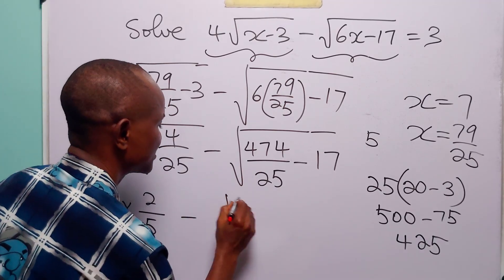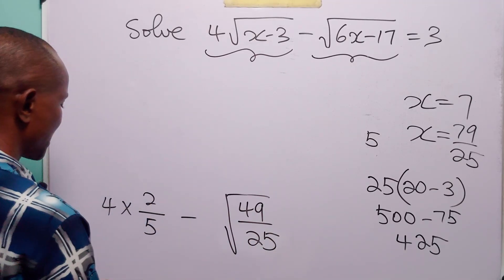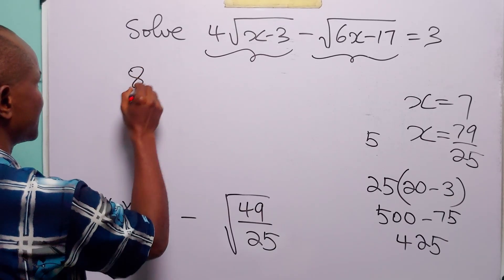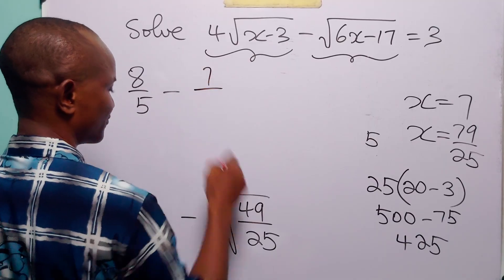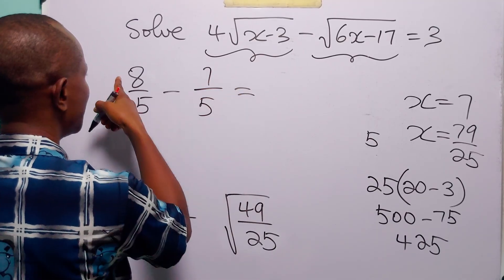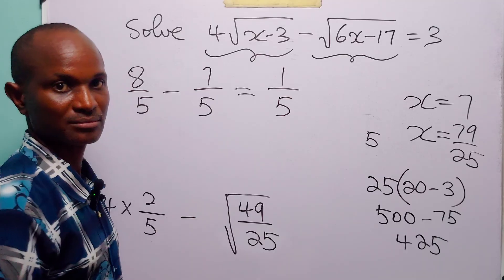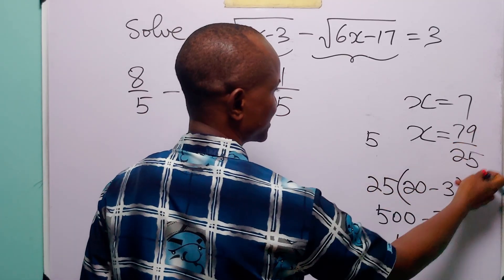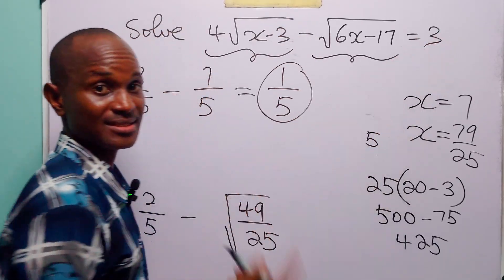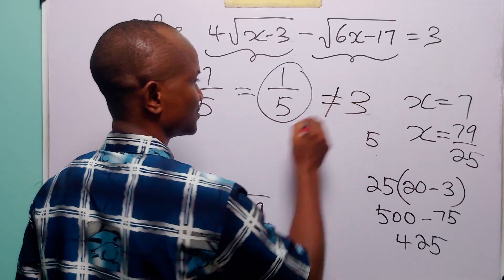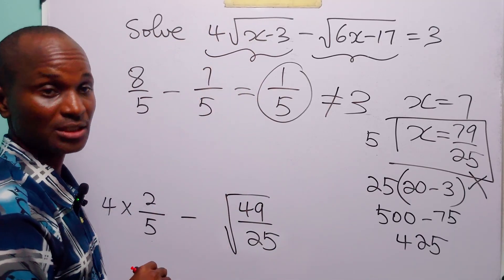So we have 4 × √(4/25) - √(49/25) = 4 × (2/5) - 7/5 = 8/5 - 7/5 = 1/5. The left-hand side equals 1/5, but the right-hand side is 3. Since 1/5 ≠ 3, x = 79/25 does not satisfy the original equation and is an extraneous root.